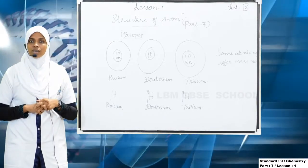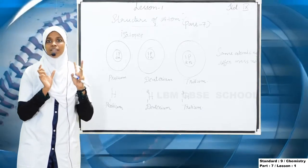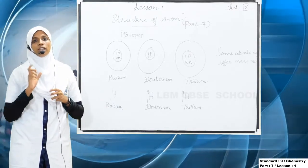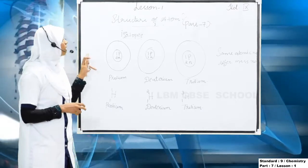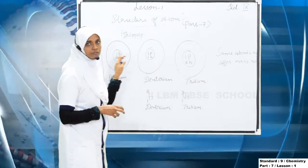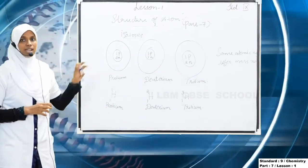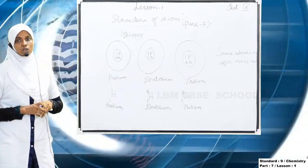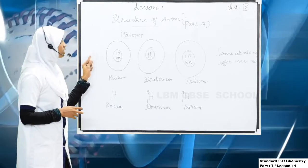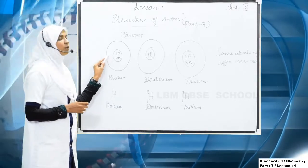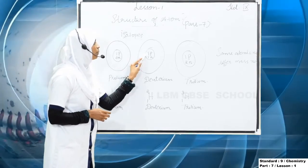What is the atomic number of hydrogen? Hydrogen is the first element in the periodic table, so the atomic number of hydrogen is one, represented by the letter Z. Here we can see three different structures of the hydrogen atom. In the first structure there is one proton and zero neutrons. In the second diagram we can see one proton and one neutron.